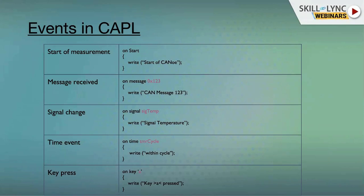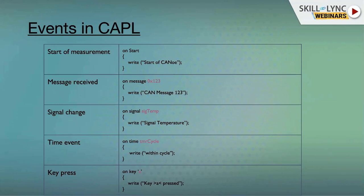Note: the timer event keyword is 'on timer', not 'on time'. Whenever we declare a timer variable — which we will cover — whenever that timer cycle completes it executes the block. For the key press event, whenever you press a key it writes the corresponding output.